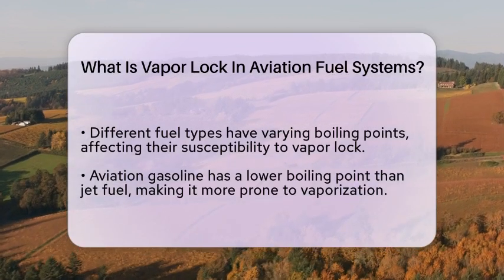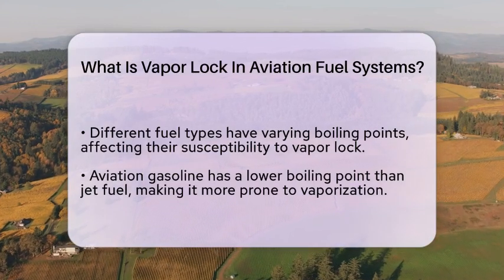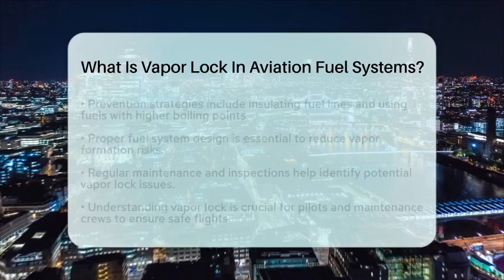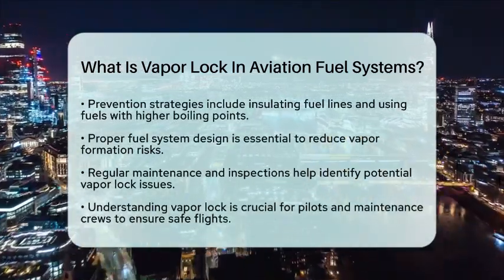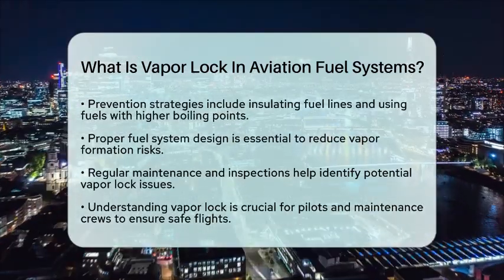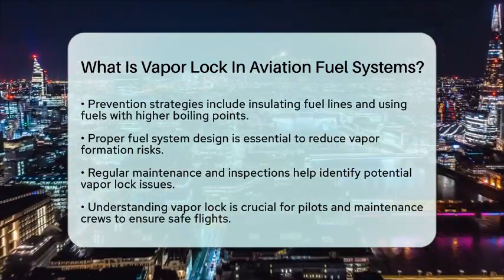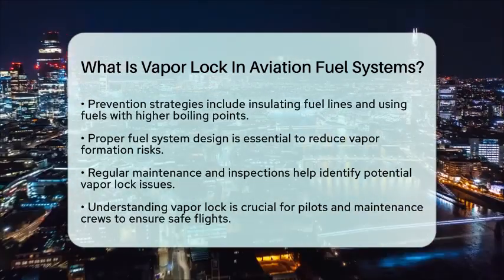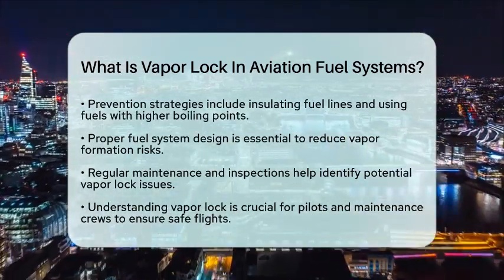To prevent vaporlock, aircraft manufacturers and operators implement several strategies. These can include insulating fuel lines, using fuel with a higher boiling point, and ensuring proper fuel system design to minimize the risk of vapor formation. Regular maintenance and inspections are also critical in identifying potential issues before they lead to vaporlock.